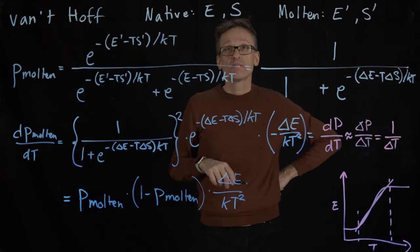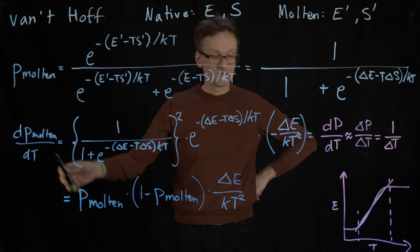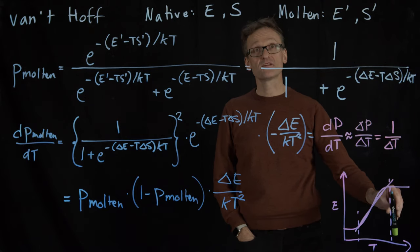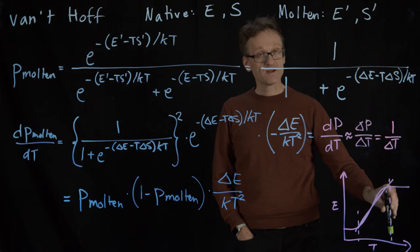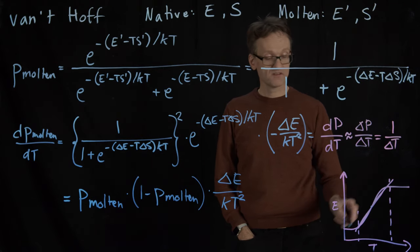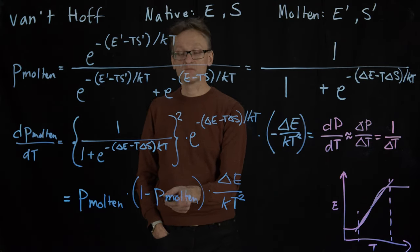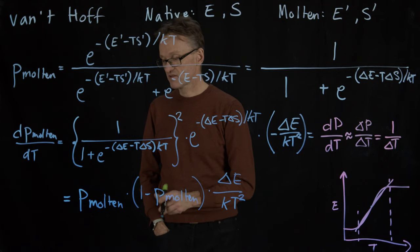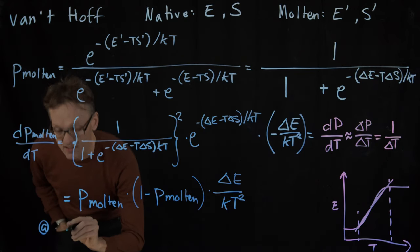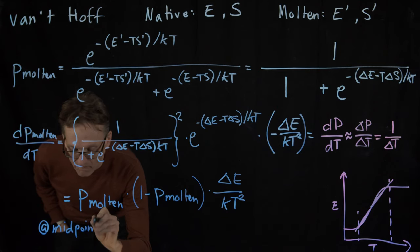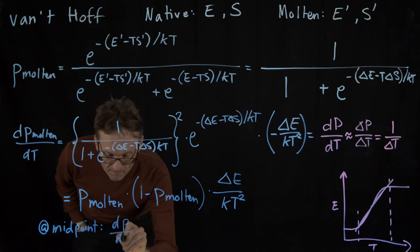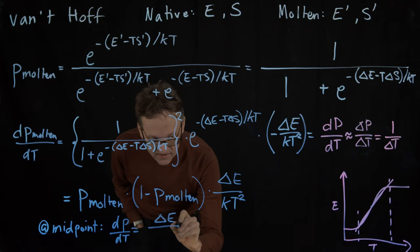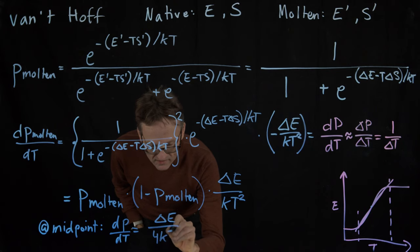But the point is that this is now a closed expression that depends on P_molten, the delta energy, and I will be able to get some of these from the experiments. What is this? Well, we're going to need to simplify a bit. Of course this term will vary as I'm going through the change here, right? Here P_molten is going to be zero and here P_molten is 100 percent. But let's pick something simple. Let's pick the midpoint here. In the midpoint, P_molten is 0.5. 1 minus P_molten is also 0.5. So at the midpoint the derivative, the derivative at midpoint, dP/dT is equal to delta E divided by 4kT squared.